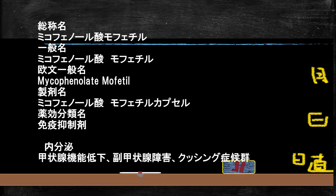添付文書1枚目です。ミコフェノール酸モフェチル、免疫抑制剤です。内分泌の副作用の項目を見ると、甲状腺機能低下症、橋本病、クッシング症候群などが載っています。今回関係するのは「副甲状腺障害」という記載です。副甲状腺障害は機能亢進症と機能低下症の両方があるため、どちらか分かりにくい書き方ですが、両方が起こり得るということでしょう。